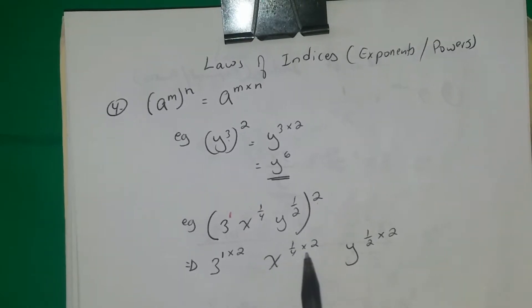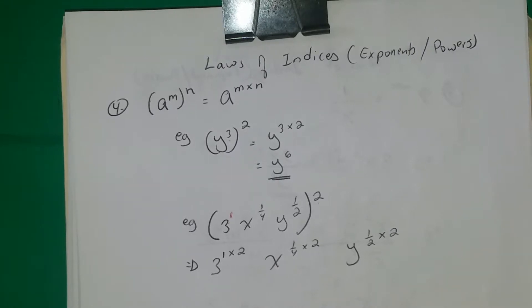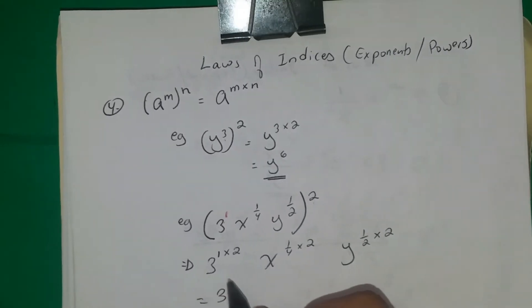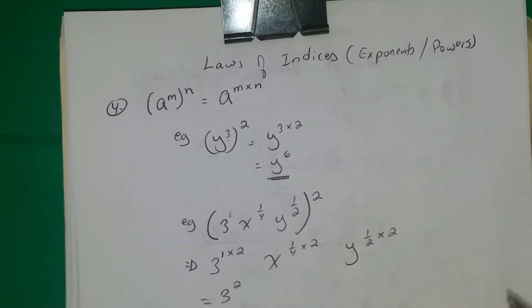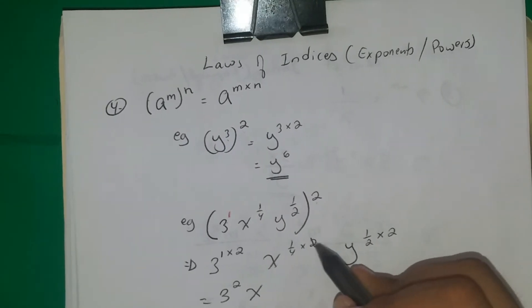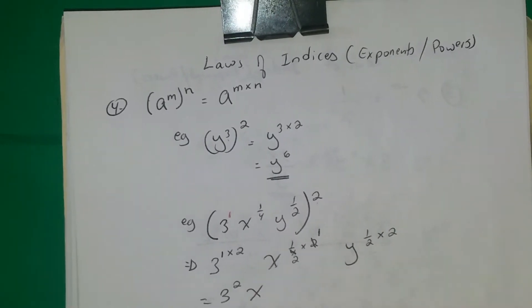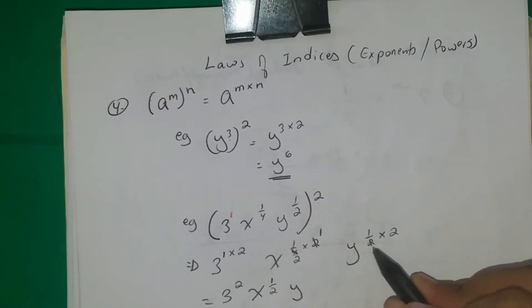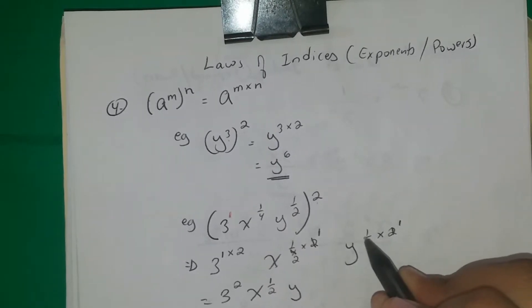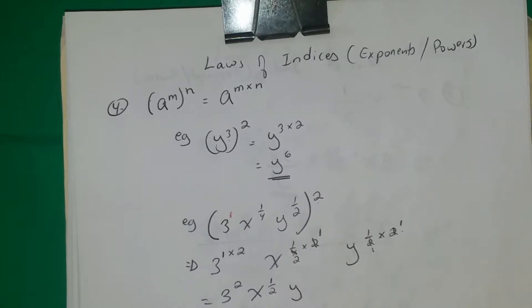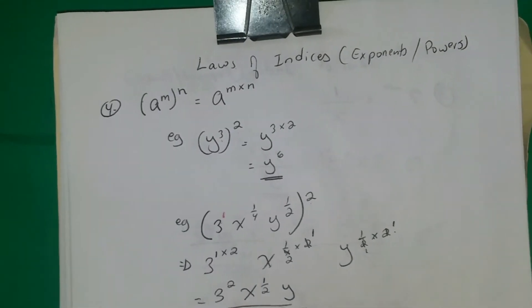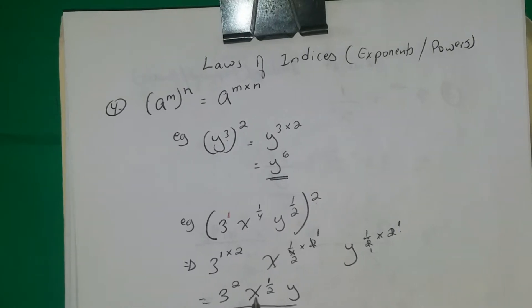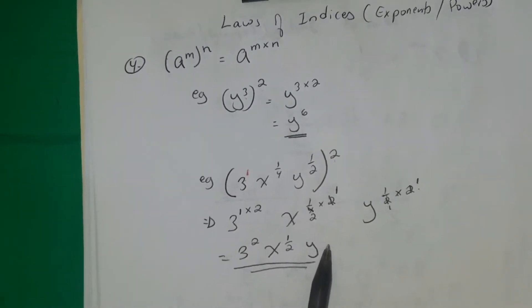All of them are multiplied by 2, which is the outer power. 3 to the 1 times 2 gives us 3 squared. For x, one-fourth times 2 gives one-half, so we get x to the one-half. For y, one-half times 2 gives 1, so y to the 1 — you don't need to write the 1, it's still okay. So the answer ends up being 3 squared, x to the half, y.